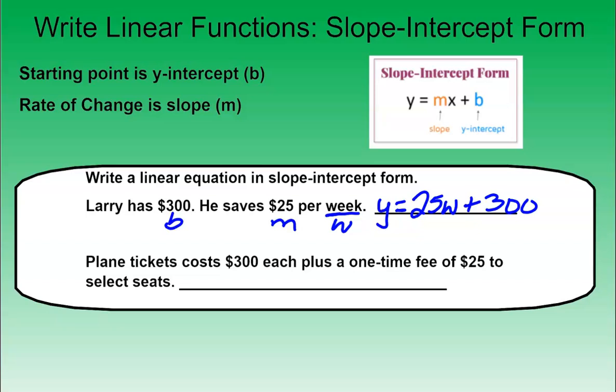Our next example. Plane tickets cost $300 each plus a one-time fee of $25 to select seats. So the rate of change here is going to be $300 per ticket. So my equation, I'm going to start with y. So y is going to be the total cost of the ticket, like the total cost for flying. So it would be y equals $300 per ticket. So I'm going to use t for ticket.